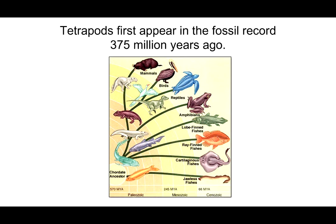Once tetrapods show up on the scene, their ability to walk on four legs enabled them to move onto land and eventually into the air. From the earliest tetrapod arose lineages that led to the amphibians, dinosaurs, reptiles, birds, and of course mammals. What an amazing evolutionary innovation those four legs were.